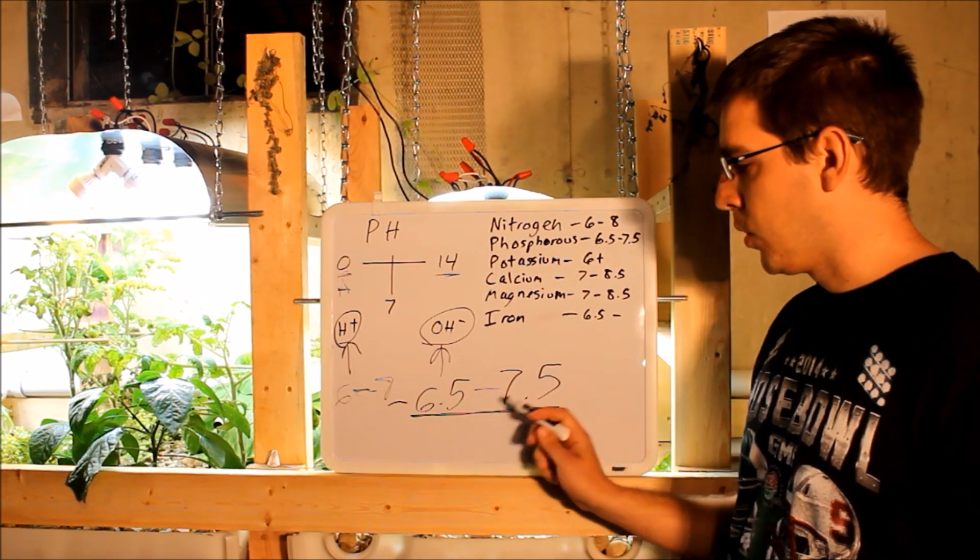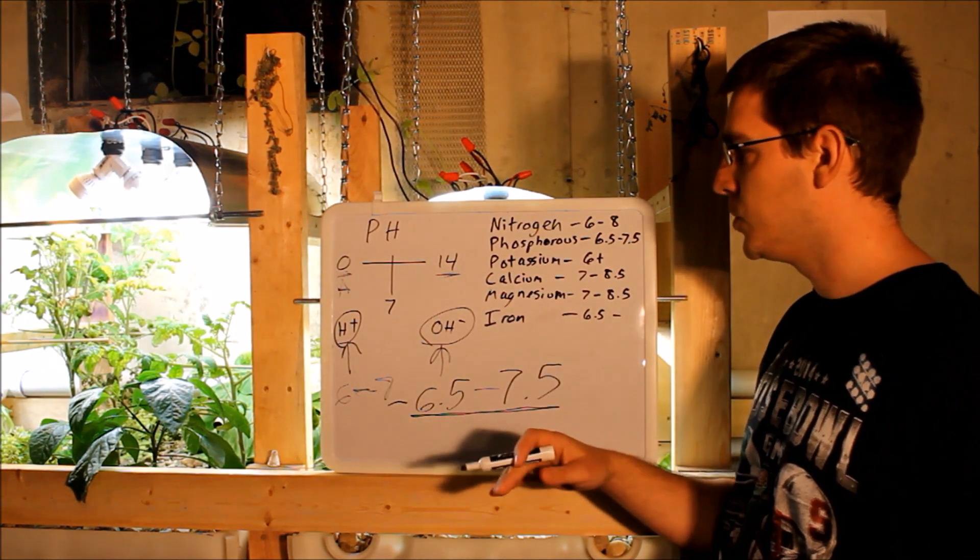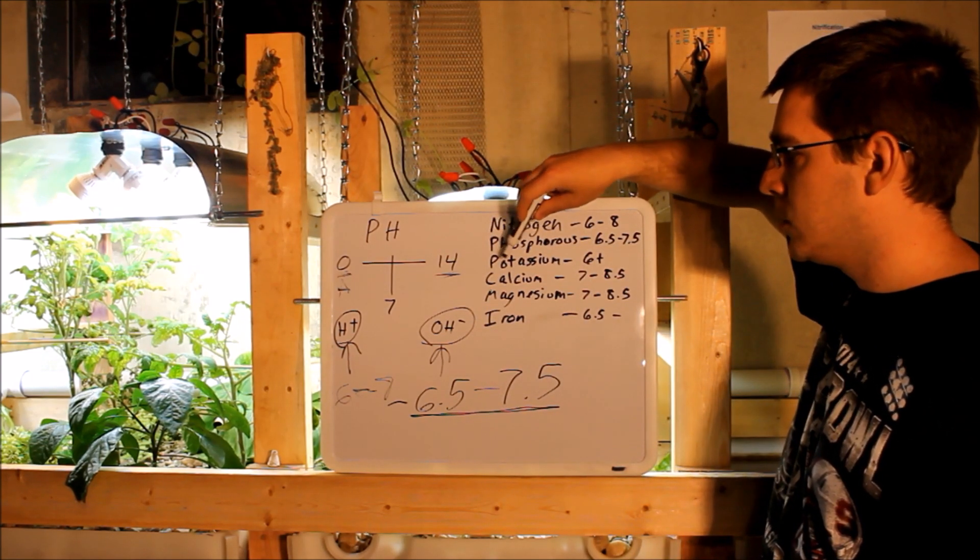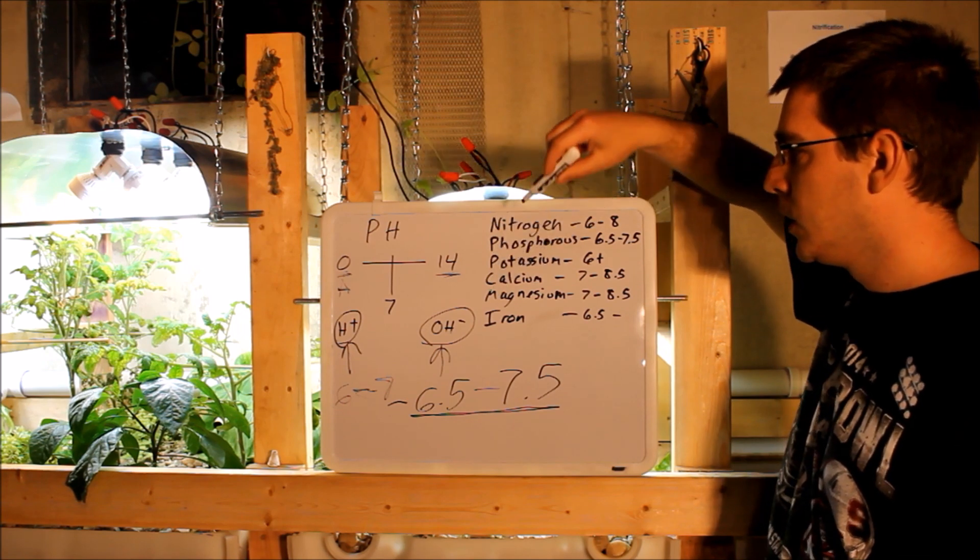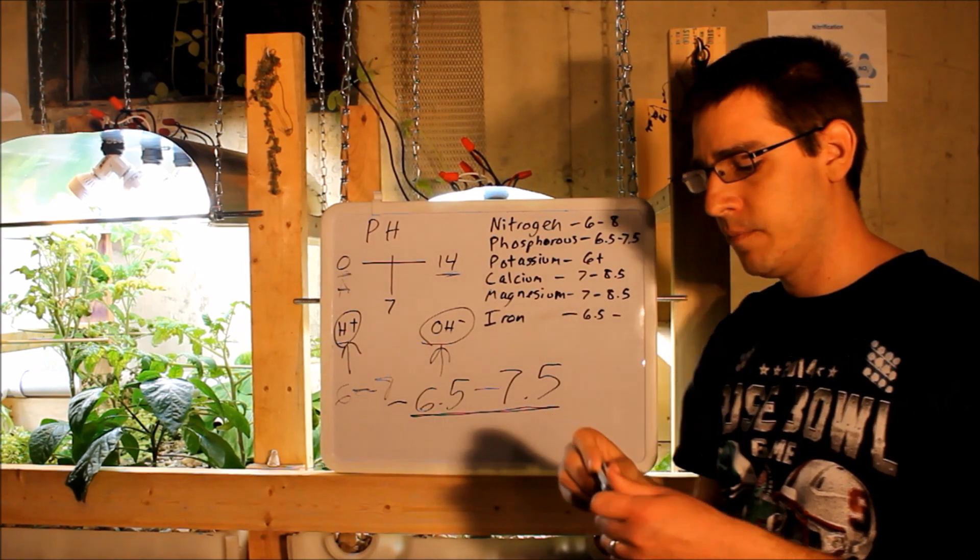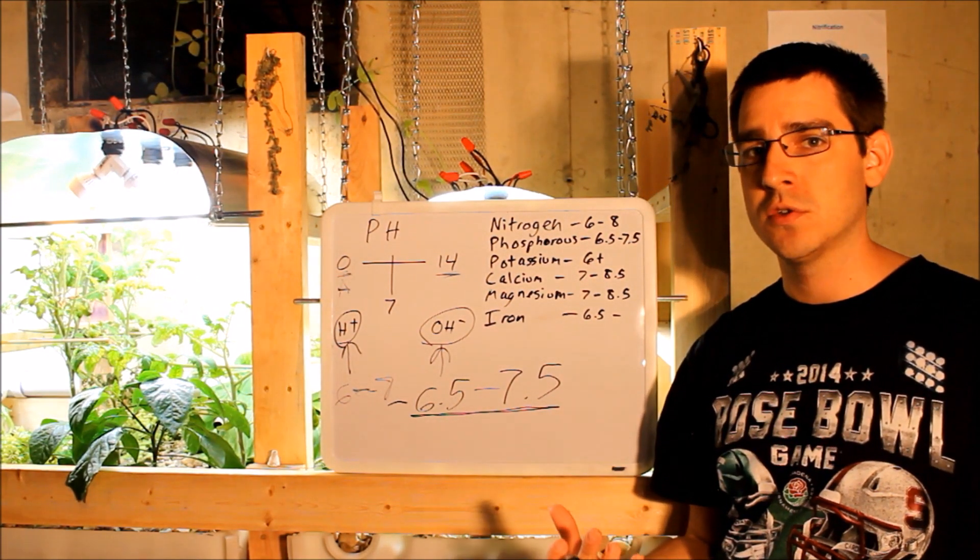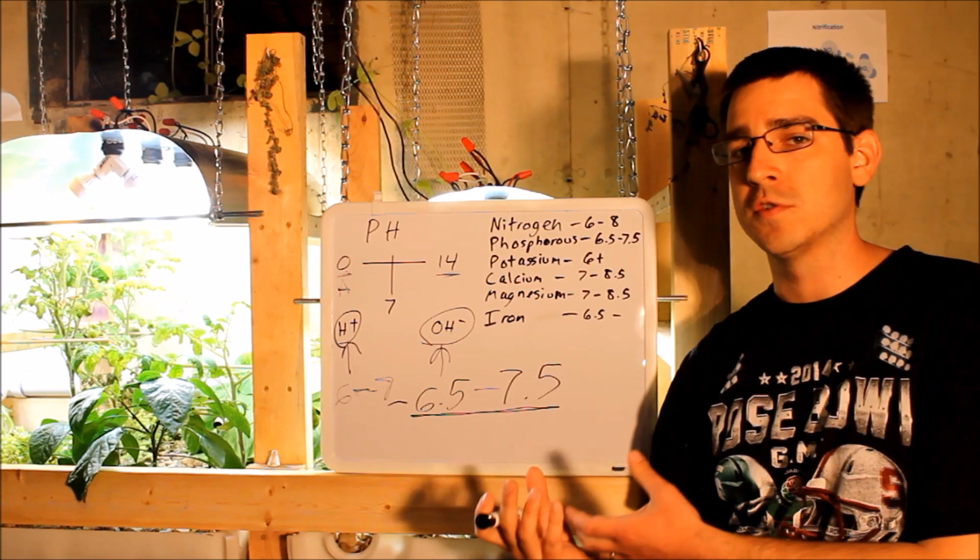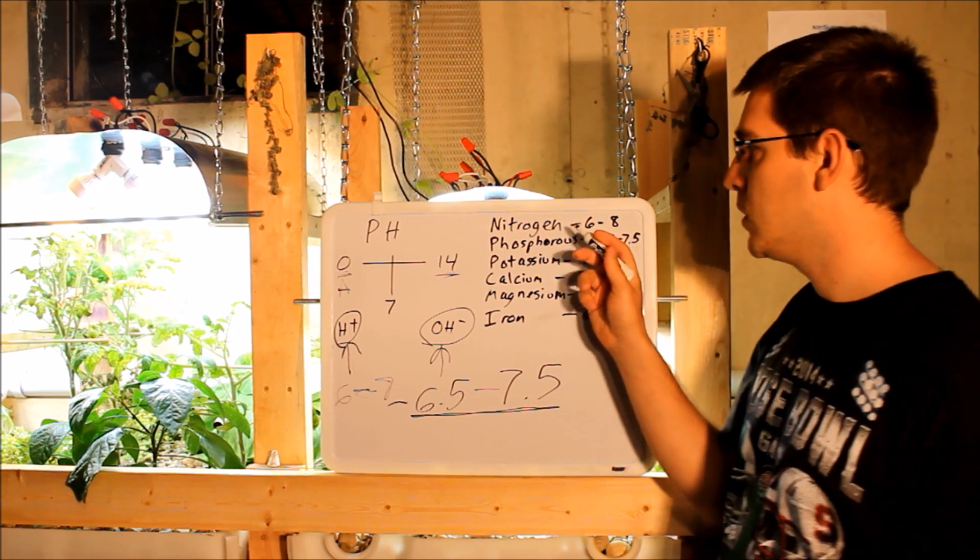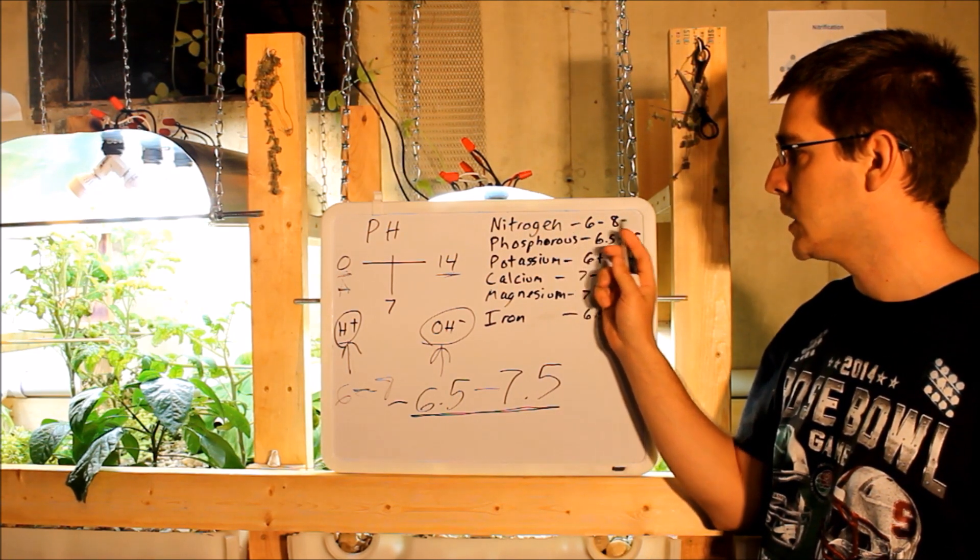So why is this important? You have all these nutrients in your system, and there are others too, but nitrogen, phosphorus, potassium, calcium, magnesium, and iron. Each one of these nutrients dissolves at, or interacts with your plants at different pHs. So it becomes soluble and available for those plants to absorb into the roots at different pH levels. For instance, nitrogen is most efficiently absorbed by your plants between 6 and 8.